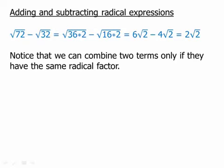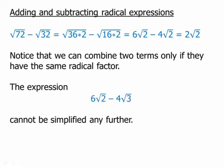Notice that we can combine two terms only if they have the same radical factor. The expression 6√2 - 4√3 cannot be simplified any further because those radical expressions are not equal.